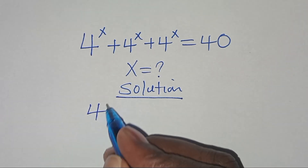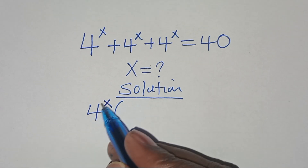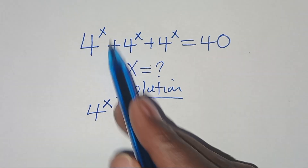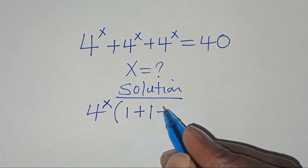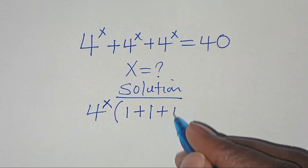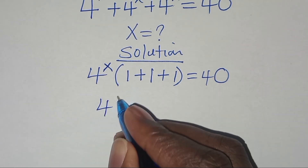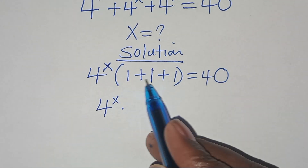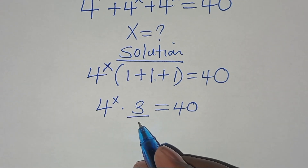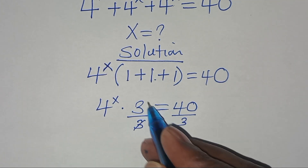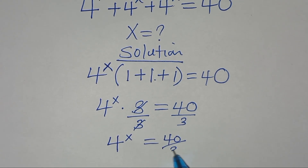We have that 4 to the power x is common here, so we can factor out 4 to the power x, so that 4 to the power x divided by 4 to the power x is 1, plus 1, plus 1, this is equal to 40. So we have 4 to the power x times 3, and this is equal to 40. Let's divide both sides by 3, so that now we have 4 to the power x, this is equal to 40 over 3.